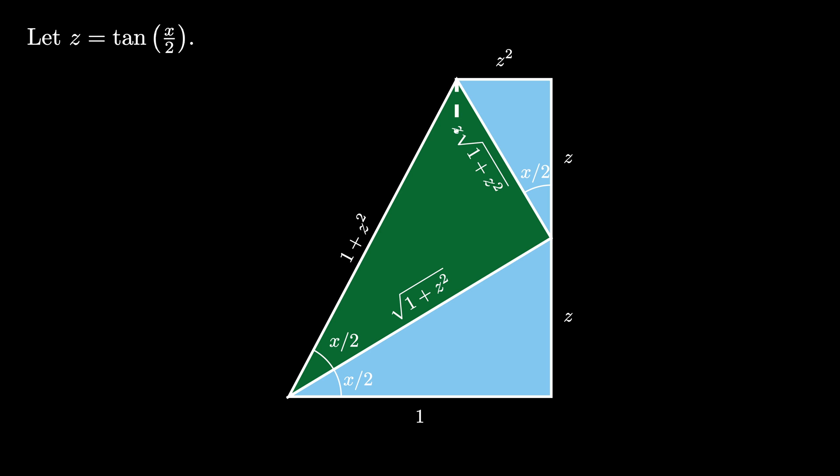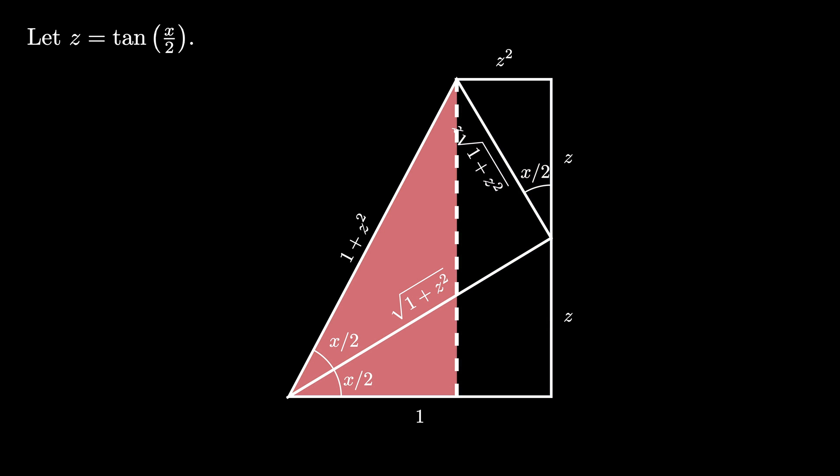Using this trapezoid diagram, we drop a perpendicular like this to form a new triangle. This new triangle has a base given by the length of 1 minus z squared, and has a height given by 2z.